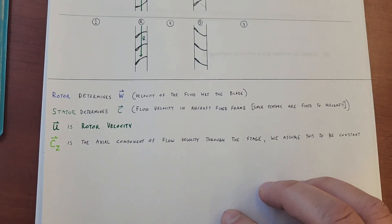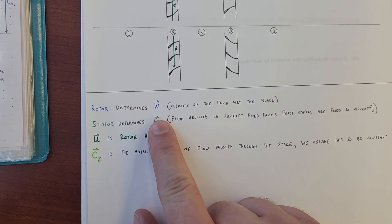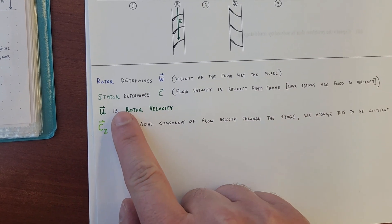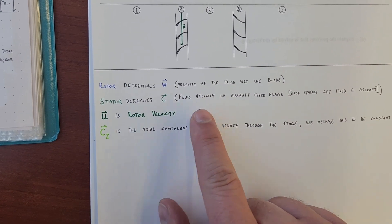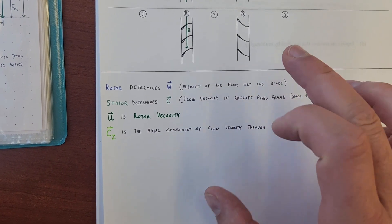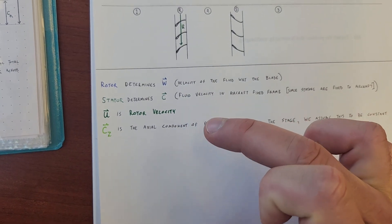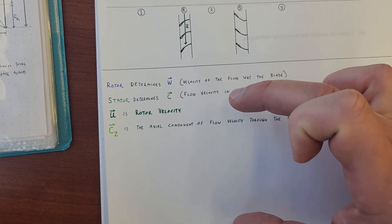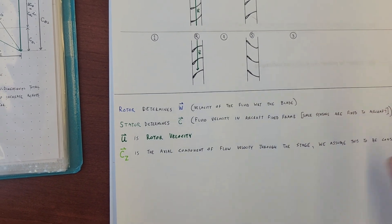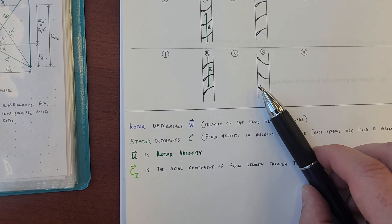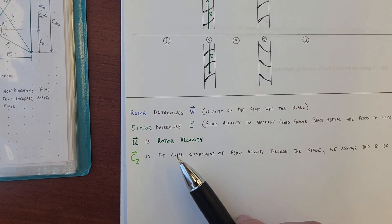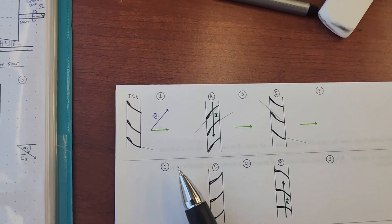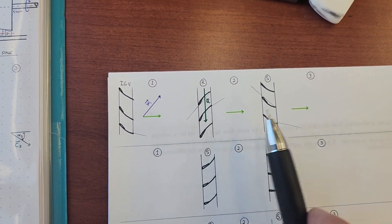Just in summary: the rotor determines W, which is the velocity of the fluid with respect to the blade. The stator determines the C vector, which is the fluid velocity in the aircraft-fixed frame — just remember that the stator is fixed, it stays still, so that is the reference frame that C is always going to be pertaining to. U is the rotor velocity, CZ is the axial flow, and it's going to be constant through all stages — constant between stations 1, 2, and 3.